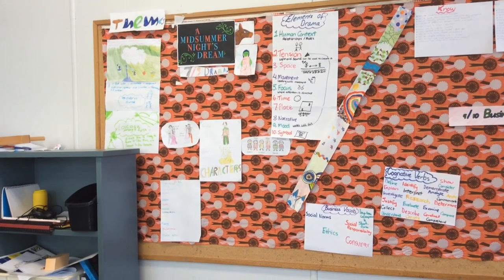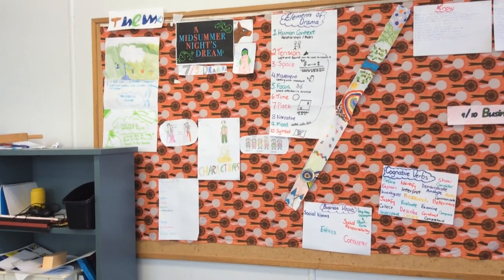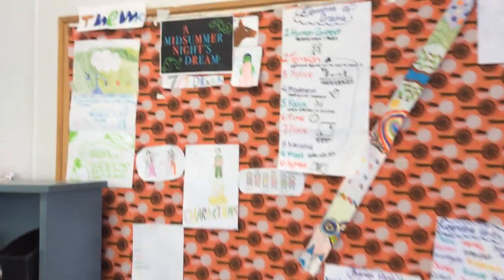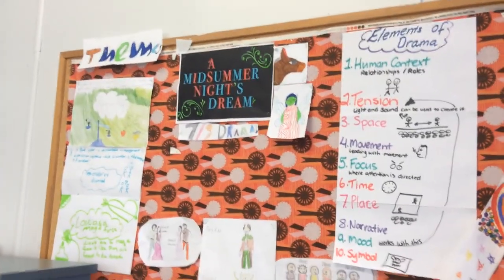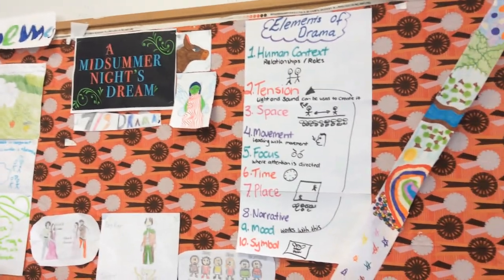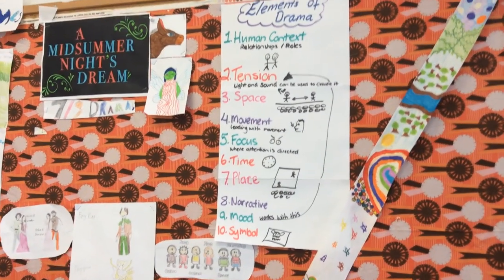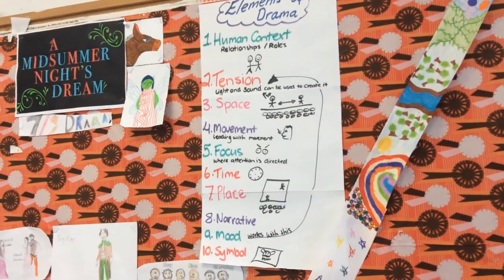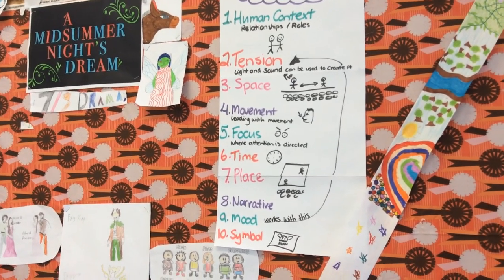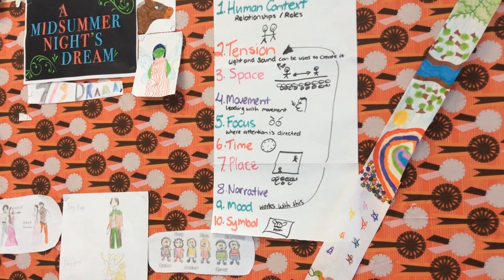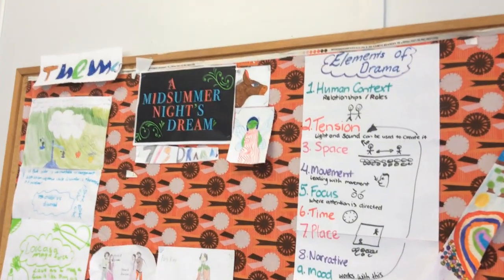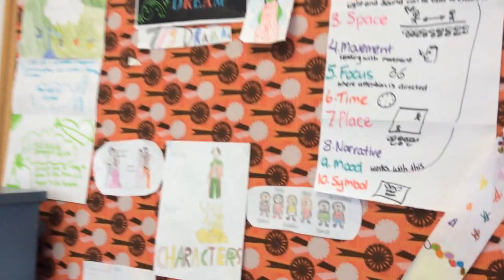The unit is called 'Sweet Dreams' and we are focusing on the Shakespeare play A Midsummer Night's Dream. The kids have come up with elements of drama, so when we're performing we look at human context, tension, space, movement, focus, time, place, narrative, mood, and symbol — they've identified all of these.